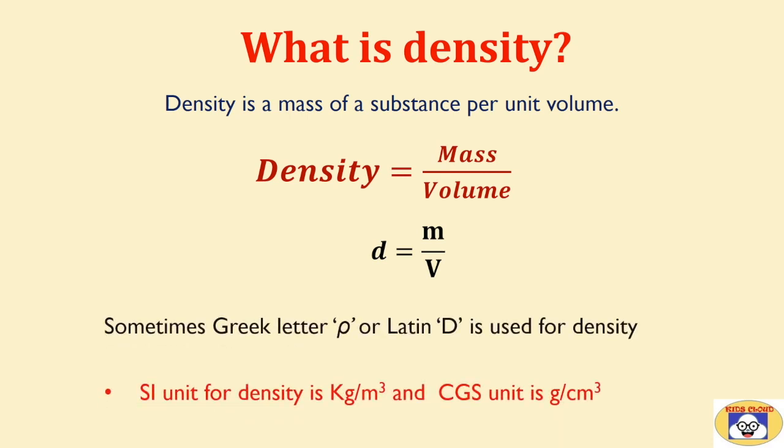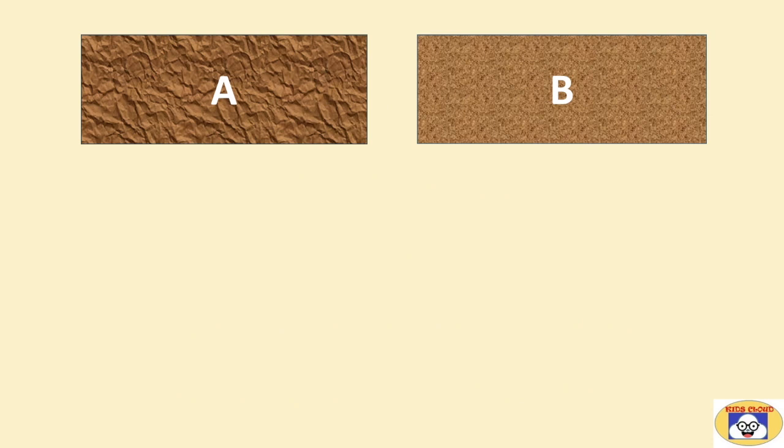Sometimes Greek letter rho or Latin D is used for density. SI unit for density is kilogram per cubic meter and CGS unit is gram per cubic centimeter. Let's try to understand the density in more detail.